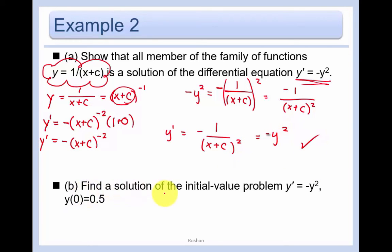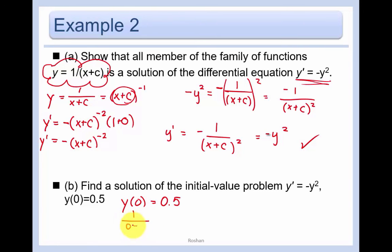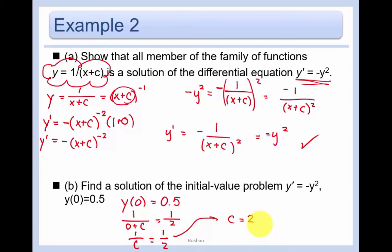Now find a solution of the initial value problem y' = -y² where y(0) = 0.5. Using y = 1/(x + c), we find y(0) = 1/(0 + c) = 1/c. Setting this equal to 1/2, we get c = 2. So the particular solution is y = 1/(x + 2).